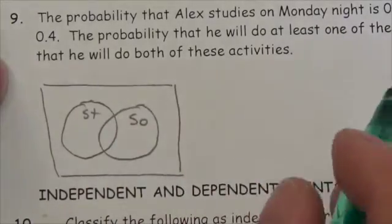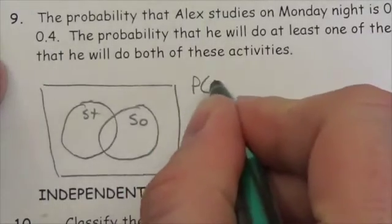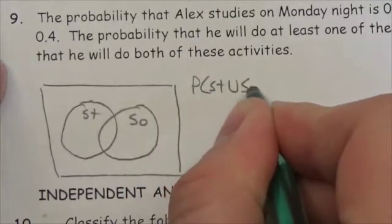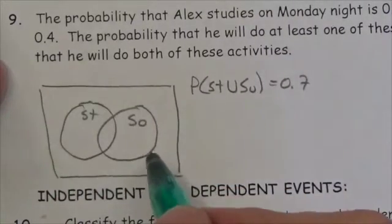The probability that he will do at least one of these activities is 0.7. Okay, so the probability of studying or soccer is 0.7. Now that is the union of those two sets there.